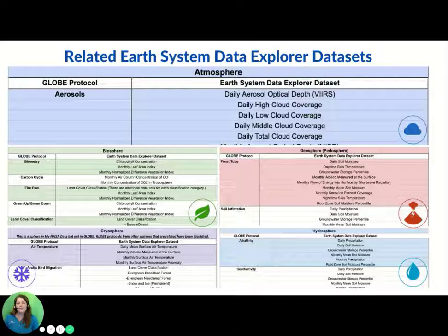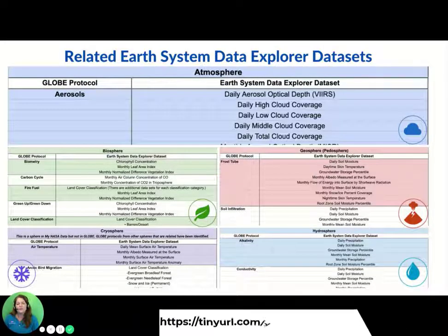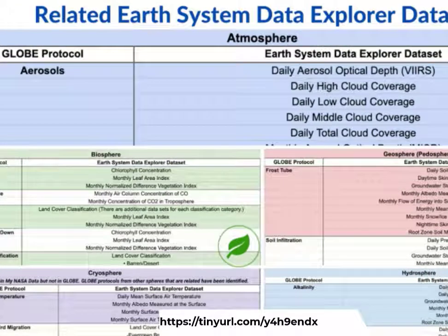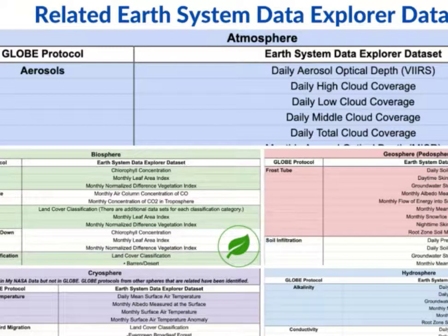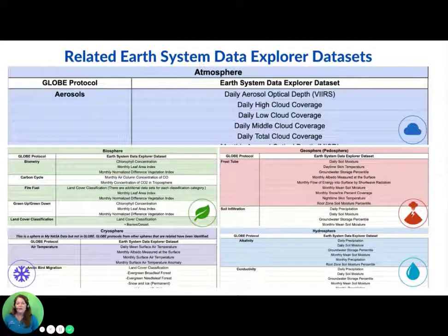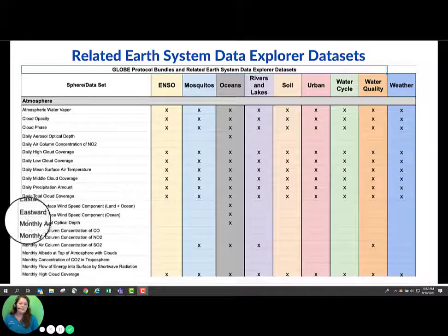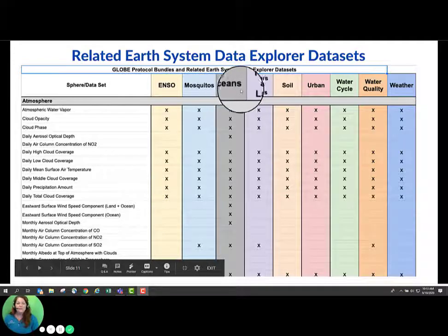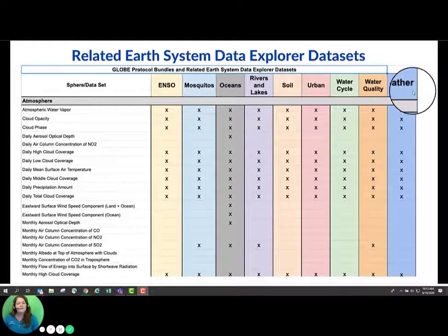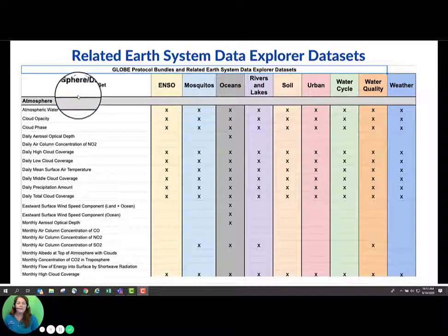This is a snapshot of the different offerings of this Google Sheet for each sphere. Notice at the top for atmosphere in blue — the GLOBE protocol shown here is for aerosols. The Earth System Data Explorer provides a variety of related NASA data sets, such as daily aerosol optical depth as well as daily cloud coverage and many more. This resource connecting protocols to NASA data is provided for each sphere. MyNASA Data also has recommended data sets supporting research projects that incorporate GLOBE protocol bundles, provided under Earth as a System at the top of the main page.